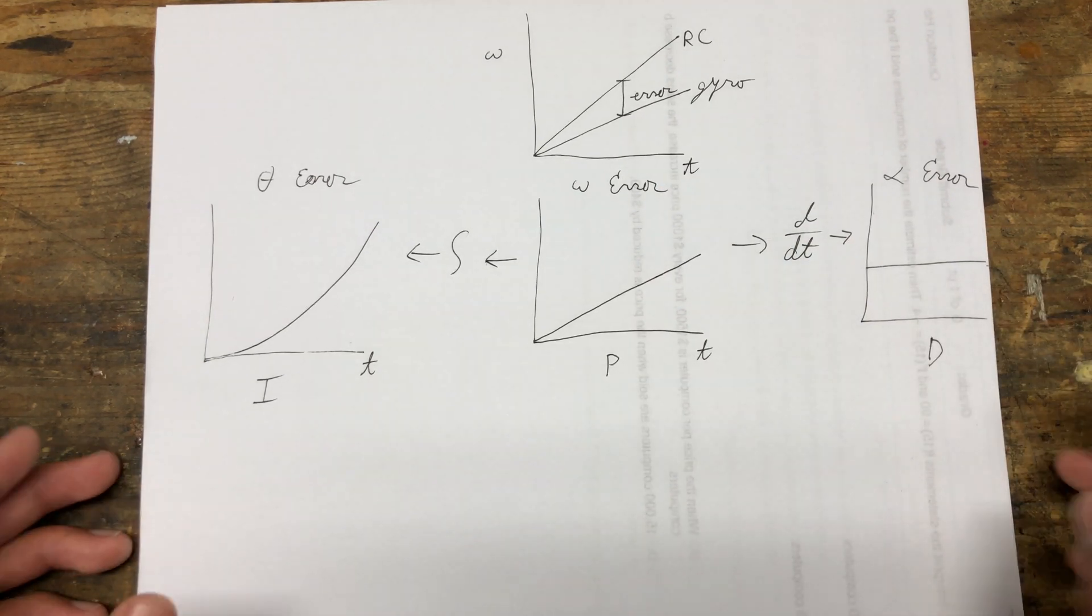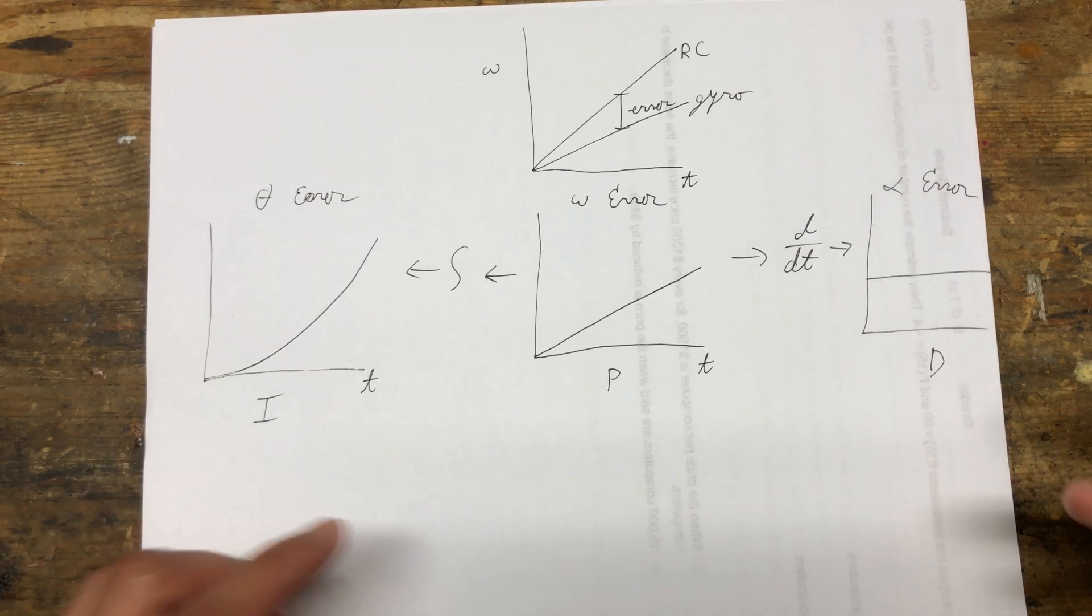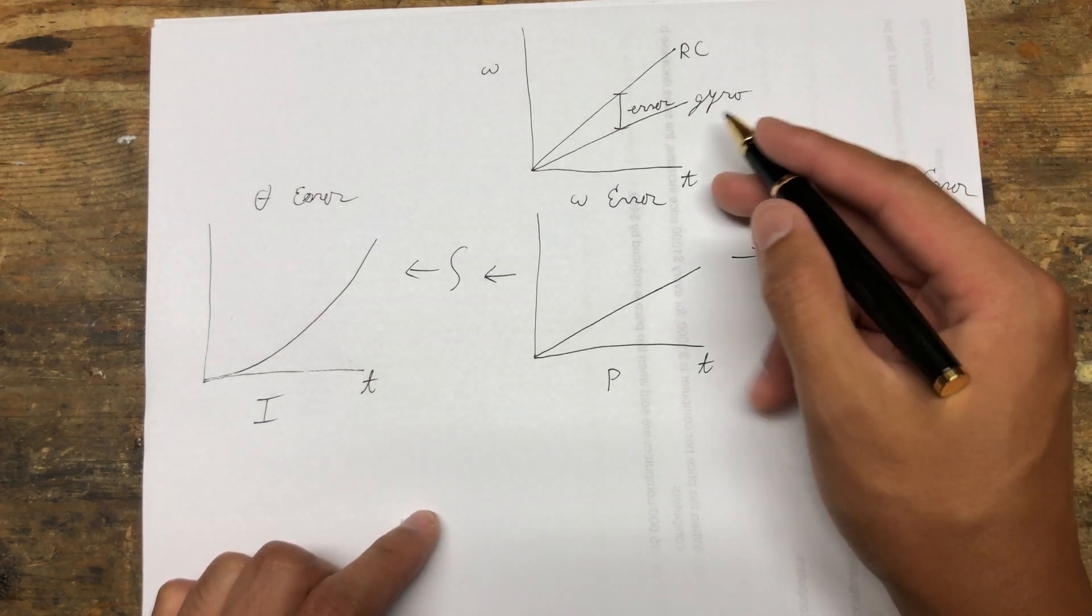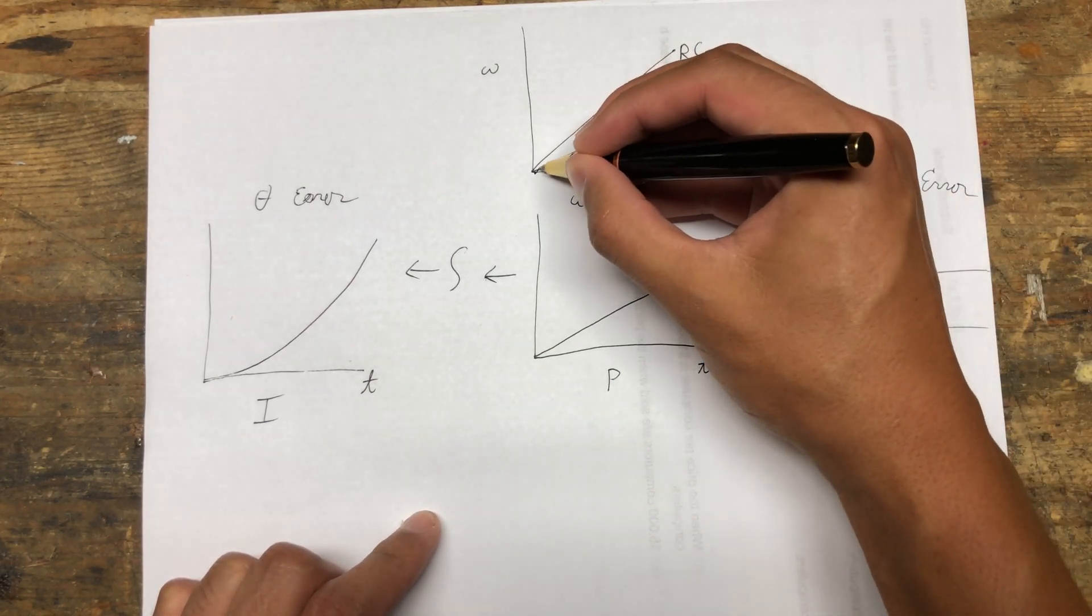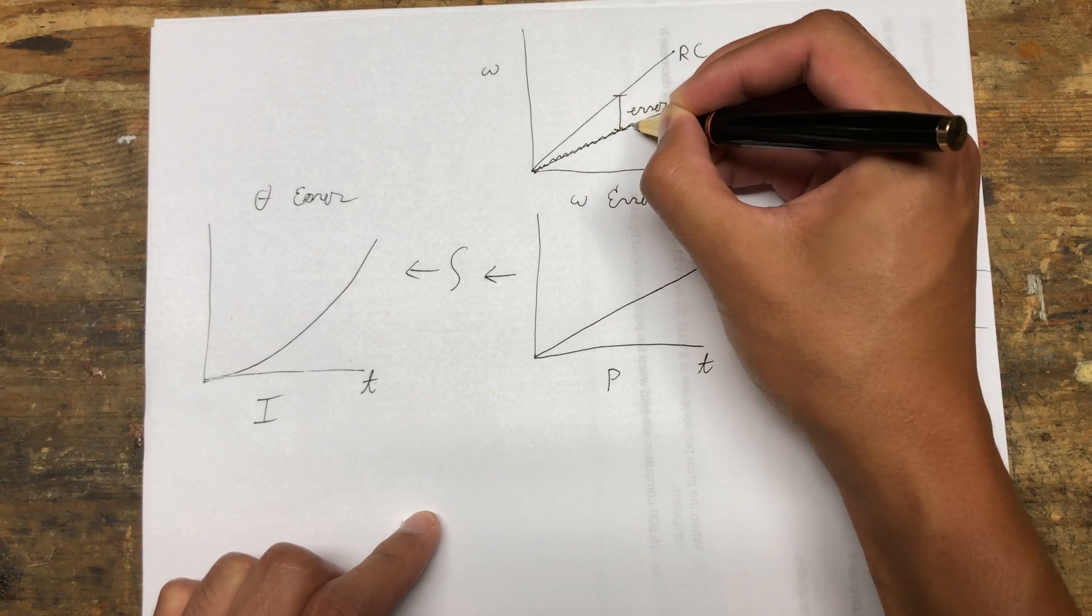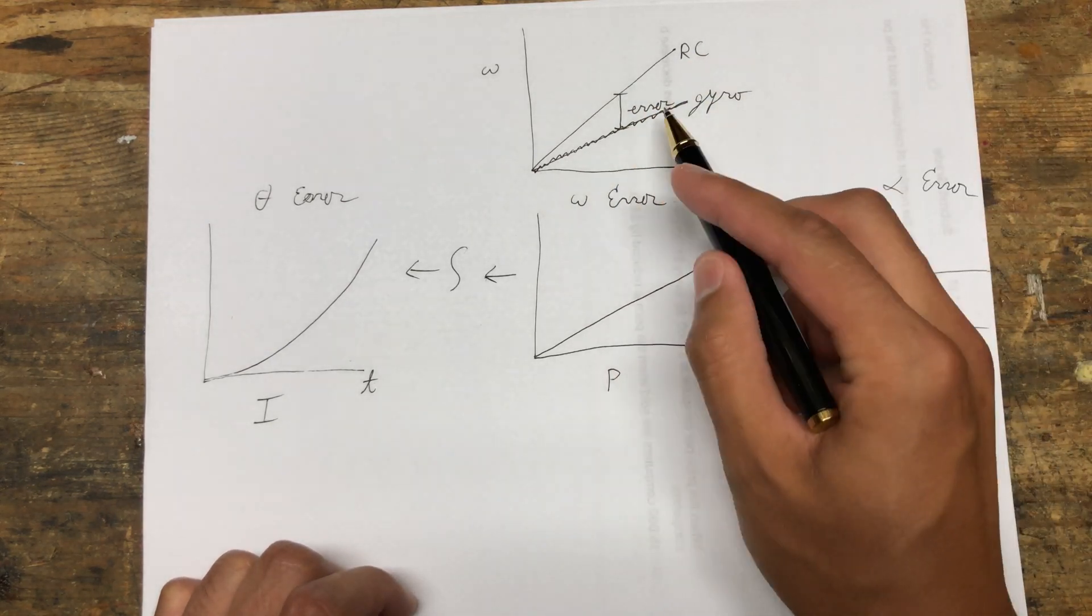So let's talk about hot motors first. If the gyro signal has just a little bit of noise in it, let's take a look at what happens to these three graphs. Say the gyro signal now looks like that.